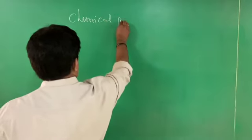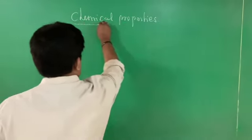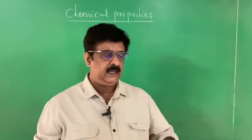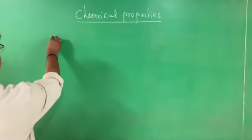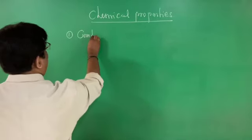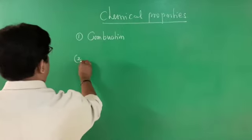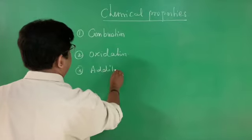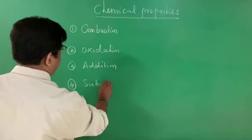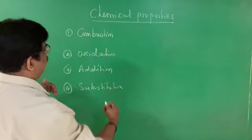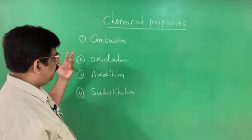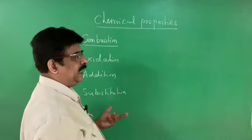Now we are finding the chemical properties of carbon compounds. Since carbon compounds are covalent compounds, they are chemically less active. There are four different areas of chemical properties given in the textbook: first, combustion; second, oxidation; third, addition reaction; fourth, substitution reaction.